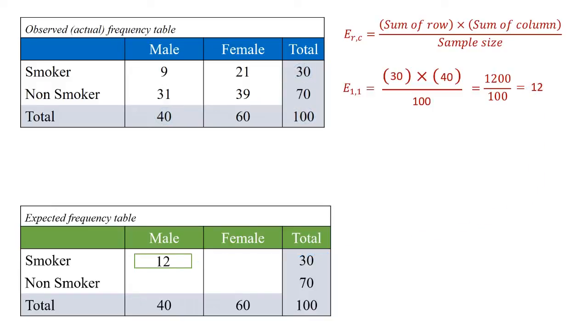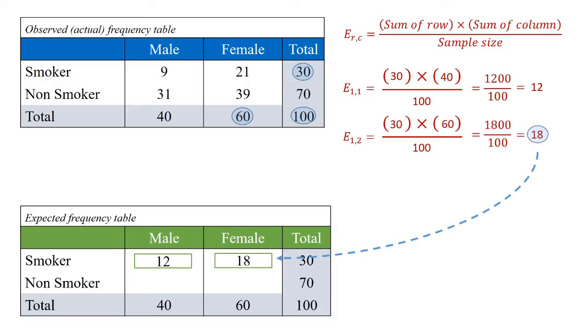We'll do another one—the position for women that are smokers. We take, in this case, 30 once again because we're looking at the smoking population. We take the number of women, 60, and divide by 100. This becomes 1800 divided by 100, which equals 18. This is the number we put into the theoretical table.